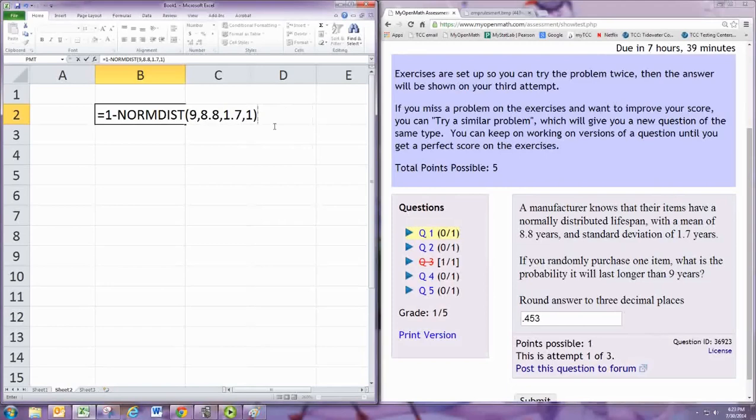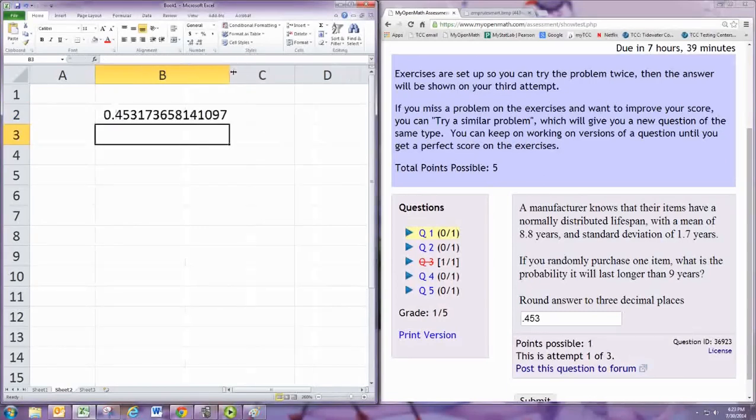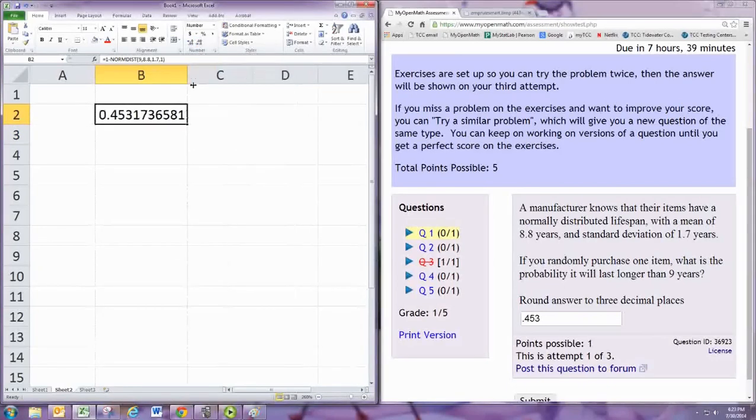And, of course, that splits it up into two. And then the total probability is 100%, so we subtract from one. I just had too many digits on there. So you can see you get the same answer.